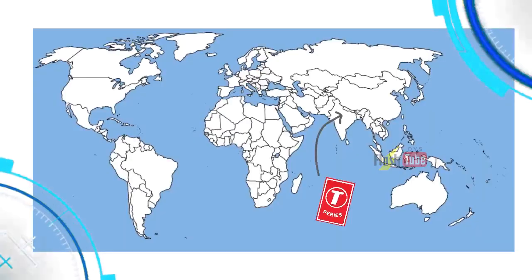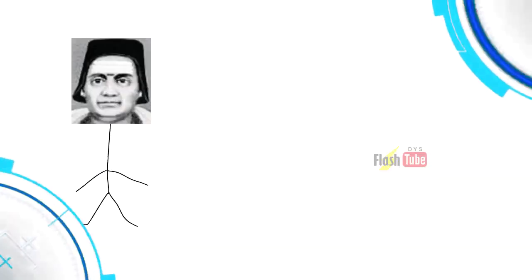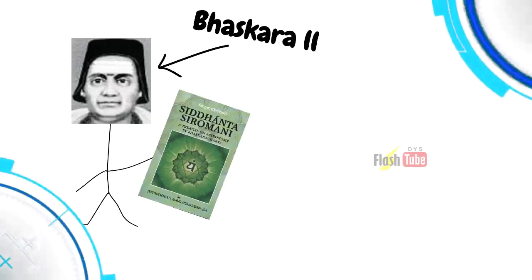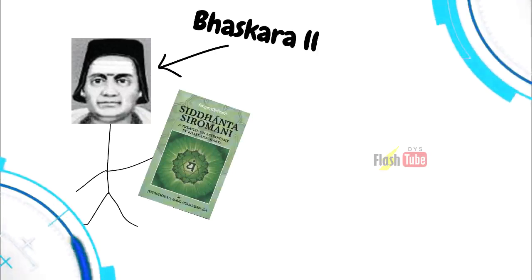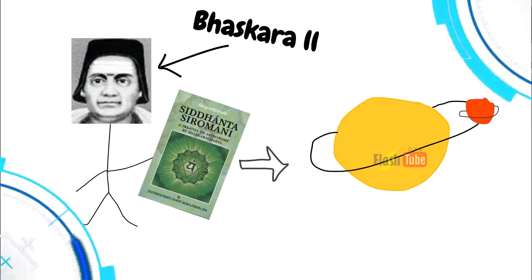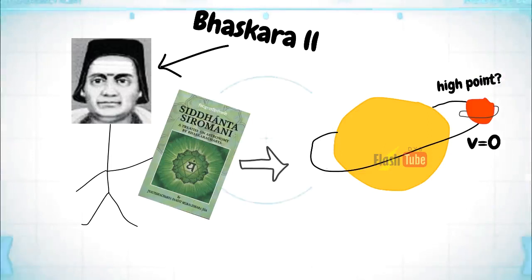India had their share of contributions too. In the 12th century, mathematician and astronomer Bhaskara Tu wrote the Siddhanta Shedomani, which contained texts in astronomy with proofs using calculus. He proved that at its highest point, the instantaneous speed of a planet is zero.